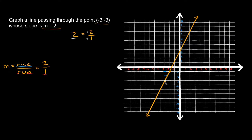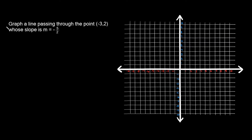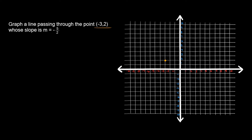Now let's try one last example with a negative slope. Graph a line passing through the point (-3, 2) whose slope is equal to negative 5 halves. The first thing we do is plot (-3, 2) — go back 3 and up 2. Our slope, which equals rise over run, is negative 5 halves.